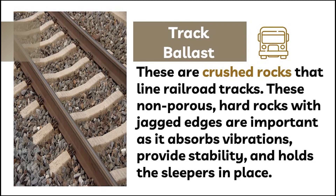Track Ballast. Track ballast refers to the crushed rocks that line railroad tracks. These non-porous, hard rocks with jagged edges are important as they absorb vibration, provide stability, and hold the sleepers in place. Without it, those sleepers might give way under the constant pressure of heavy passing trains.